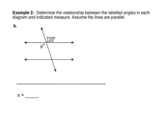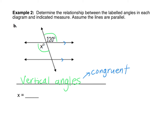Problem B gives us another pair of labeled angles, and again we are assuming the two lines are parallel. Notice that these two angles are just across from each other — on opposite sides of two intersecting lines. We're just looking at these two angles, and we know they are a pair of vertical angles. Vertical angles are congruent, meaning they have the exact same measure, so X must also be 120 degrees.